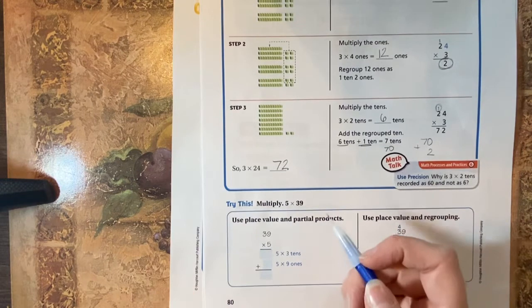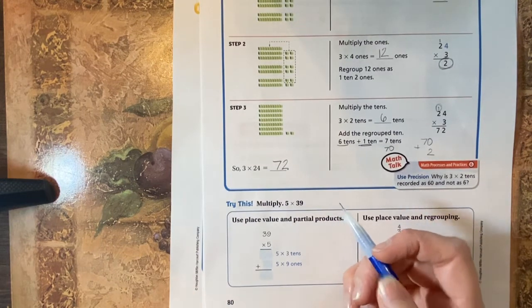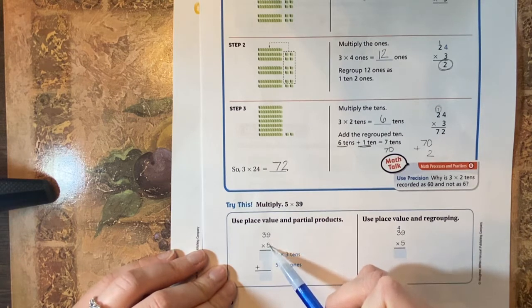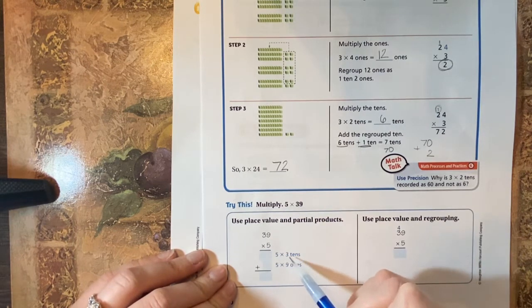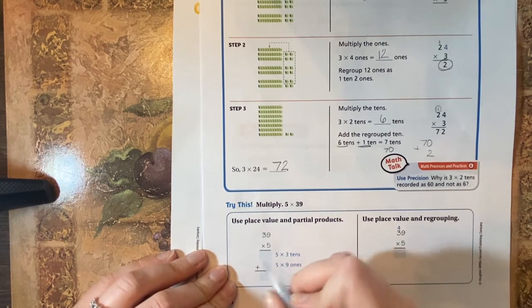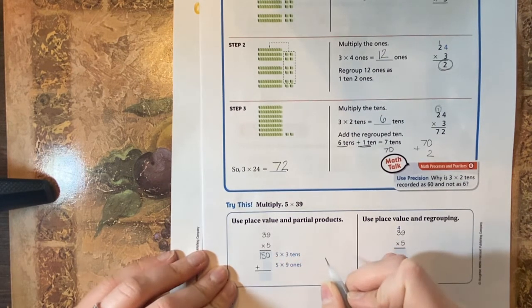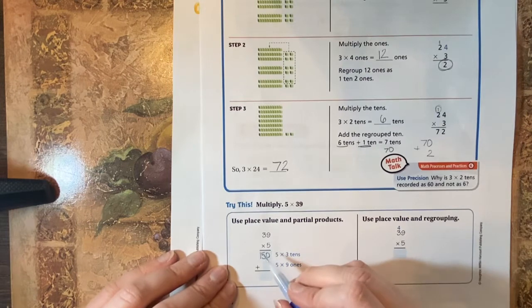So let's do this down here. We'll use place value here. So we start with the tens place, three times five tens, five times three tens. That's going to be 150 because five times three is 15, and if it's in the tens, we have 150.